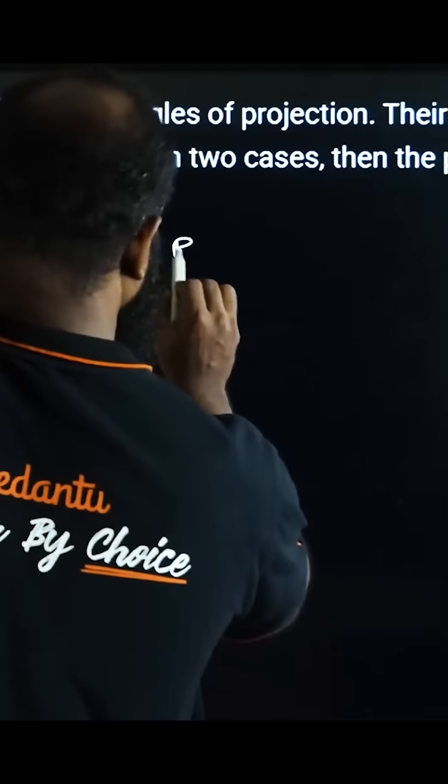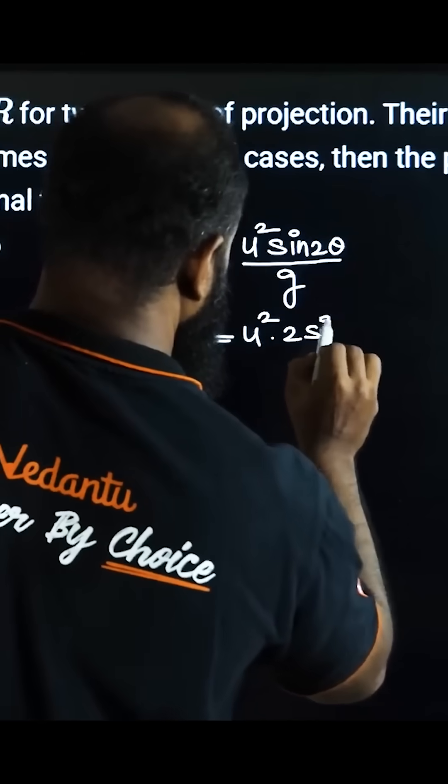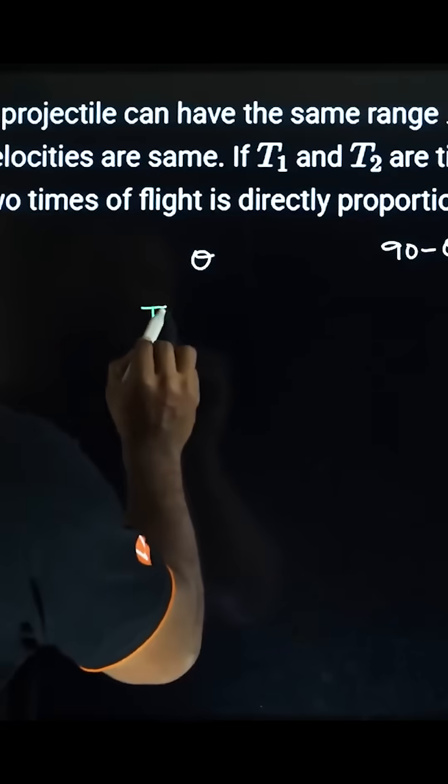First of all, the range R equals u² sin 2θ over g. The initial velocity is the same. Time of flight is 2u sin θ over g.